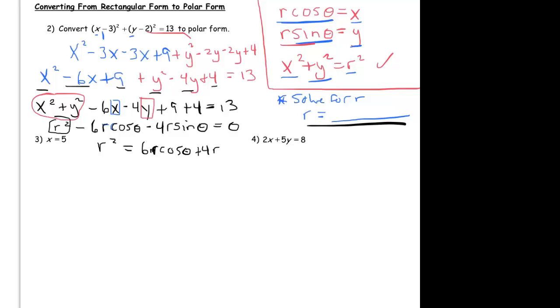Minus 4 times y is r sine theta, and now notice I have a 9 plus a 4 which is a 13, and then I have an equals 13 on the other side, so if I subtract 13 from both sides I just get a 0.